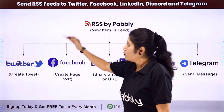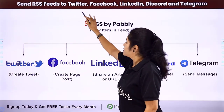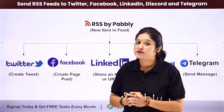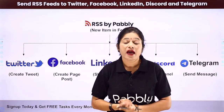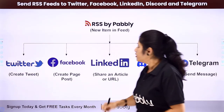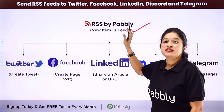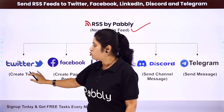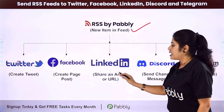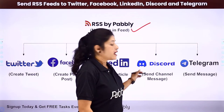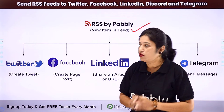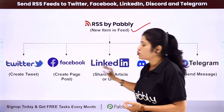In this video we are going to learn how you can send RSS feeds to Twitter, Facebook, LinkedIn, Discord and Telegram. So let's suppose you are running a website, a news channel or an e-magazine and you are updating RSS feeds on a regular basis. Now you want that whenever a new RSS feed is updated, automatically the same feed should be shared on your Twitter account as a new tweet, on your Facebook page as a new page post, on your LinkedIn account as an article, on your Discord channel as a new message and also on your Telegram channel as a new message. For that you need to integrate your RSS with Pabbly Connect and all these social media platforms.